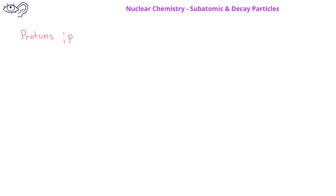For protons, we use a lowercase letter p with a mass number of 1 and an atomic number of 1. For the neutron, we use a lowercase n as the symbol with a mass number of 1 and an atomic number of 0 since neutrons have no charge.